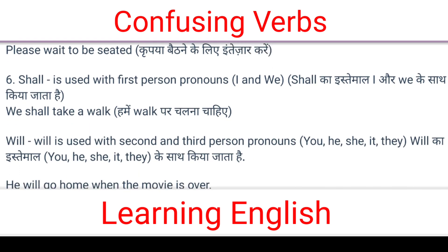'Shall' is used with first person pronouns — I and we. Shall ka istamal I aur we ke saath kiya jata hai. For example: 'We shall take a walk' — Hamein walk par chalna chahiye. 'Will' is used with second and third person pronouns — you, he, she, it, they. Will ka istamal you, he, she, it, they ke saath kiya jata hai.